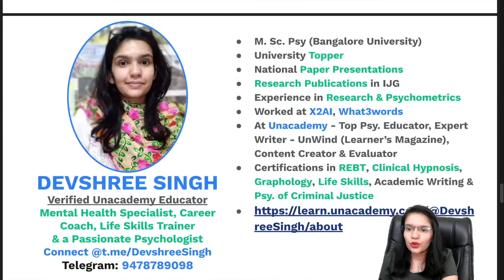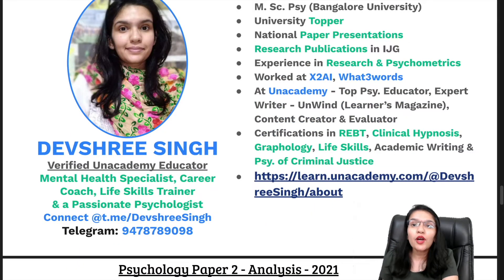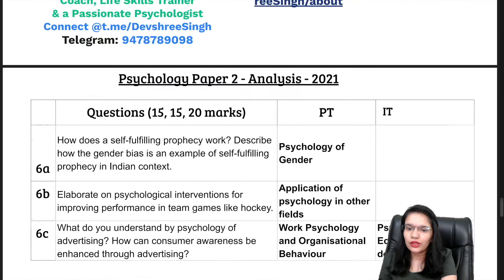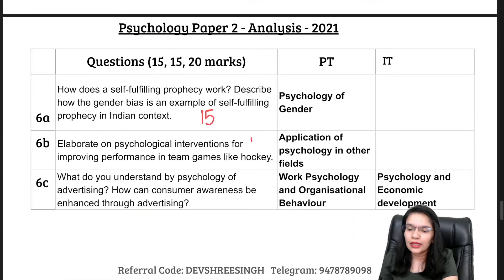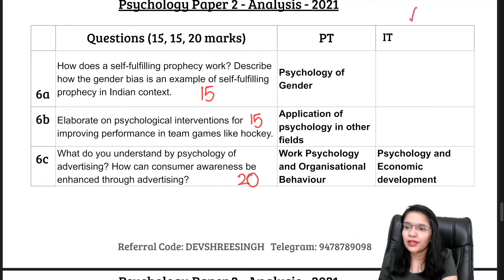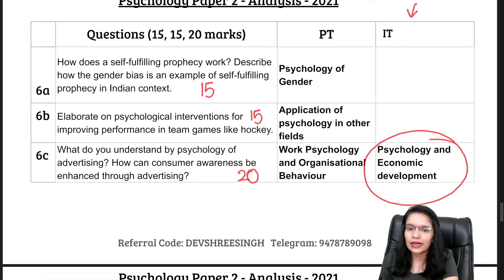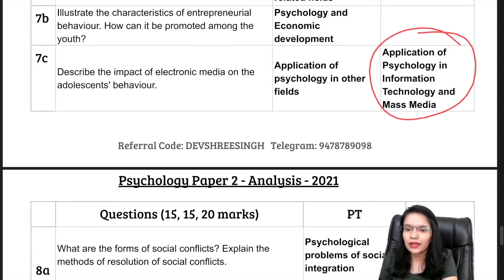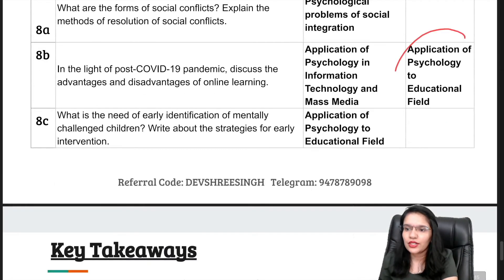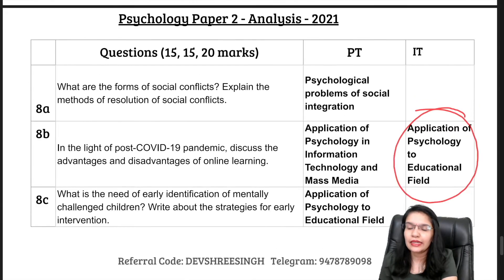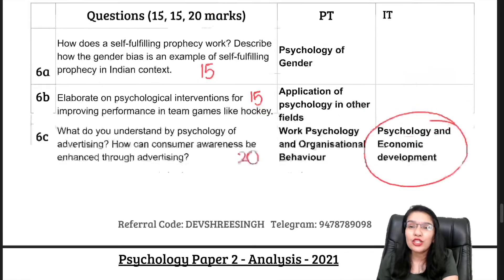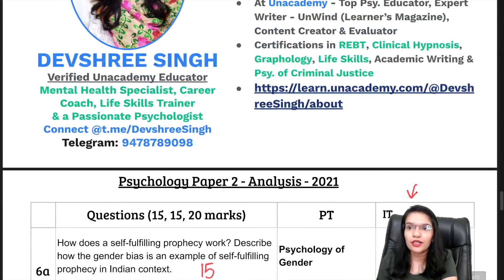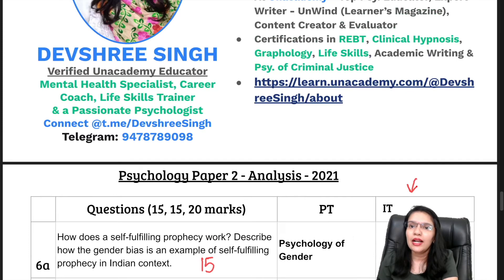Moving on to Questions 6 and 8, these are optional questions with 3 sub-parts each which you have to answer, distributed as 15, 15, and 20 marks. From here you can see the interconnected topics shown in Questions 6, 7, and 8. This is a good option for you — to pick those questions where there are fewer interconnections, as your chances of scoring a good mark will increase.